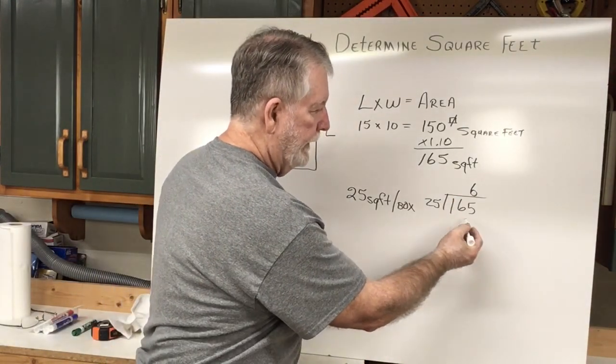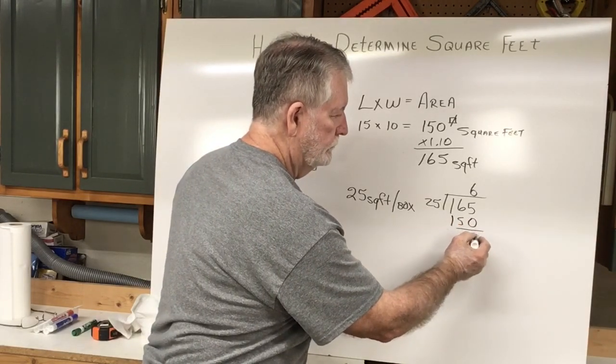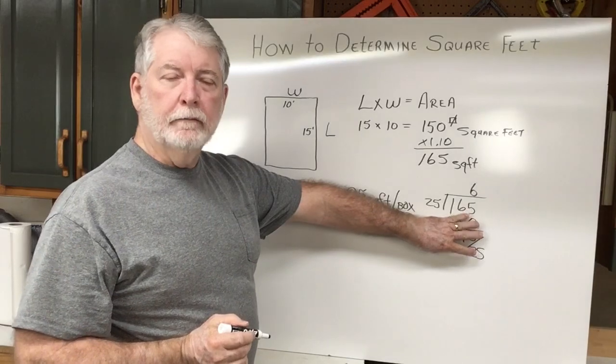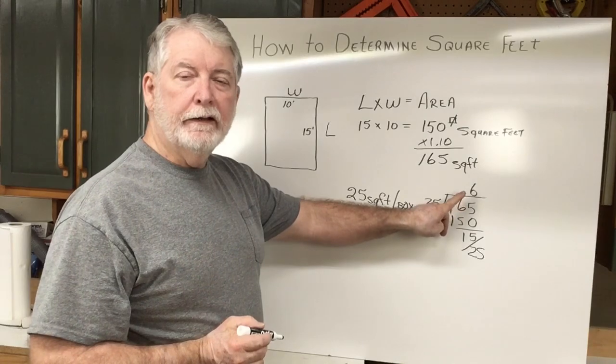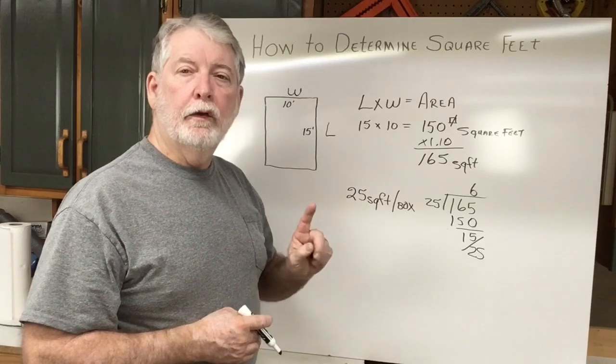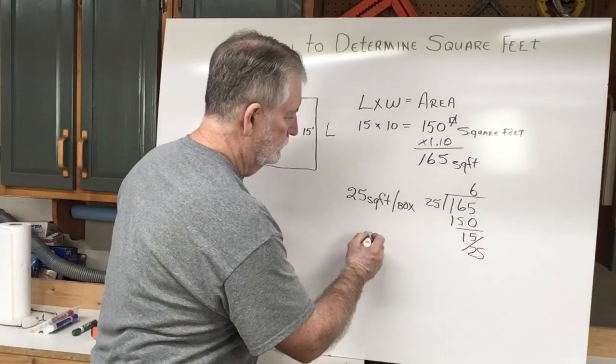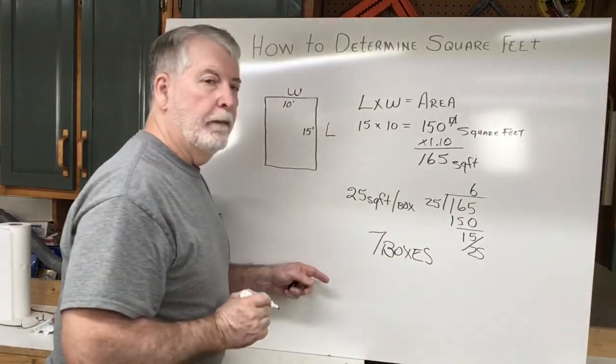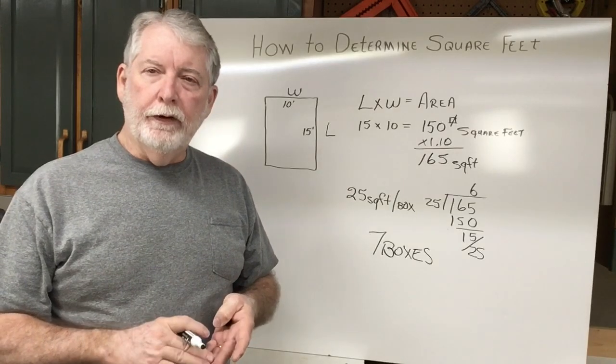If you want to actually do the math, this part really doesn't matter. But when you divide the 25 into the 165, you're going to get 6 boxes plus some. So what are you going to buy at the store? You'll end up buying 7 boxes of flooring.